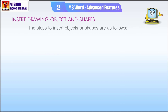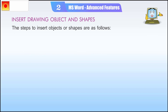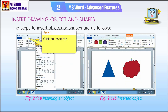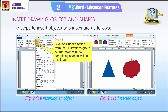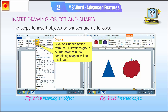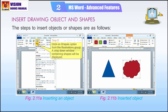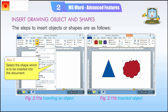The steps to insert objects or shapes are as follows. Step 1: Click on the Insert tab. Step 2: Click on the Shapes option from the Illustrations group. A drop-down window containing shapes will be displayed. Step 3: Select the shape which is to be inserted into the document.